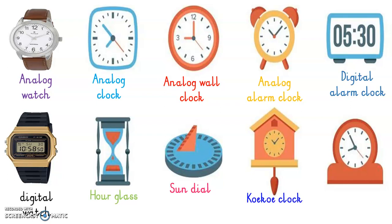This is a funny looking clock called a cuckoo clock. A cuckoo clock makes a sound where a little bird pops out in the red box at the top and goes cuckoo, cuckoo as the clock strikes on the hour — for example at 11 o'clock, 2 o'clock. The last clock is a very old clock we don't see often; it is called a tambour clock, and it is also an analog clock.